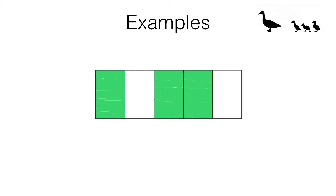Here's the answer. There are five equal parts, so we've got five fifths, and out of those one, two, three are shaded green. So the fraction we're after is three fifths — three fifths of the rectangle is shaded green.